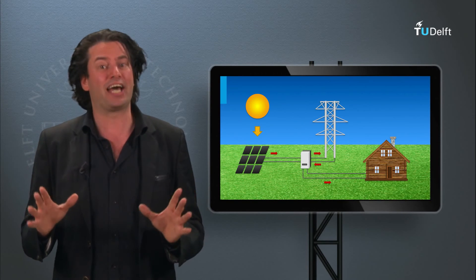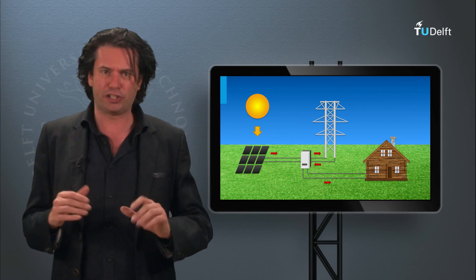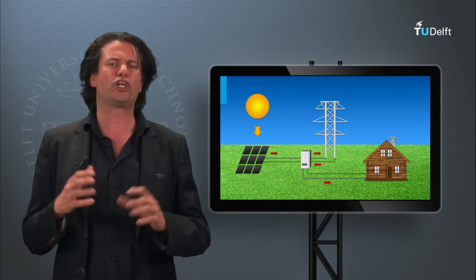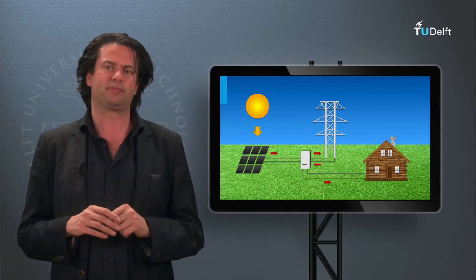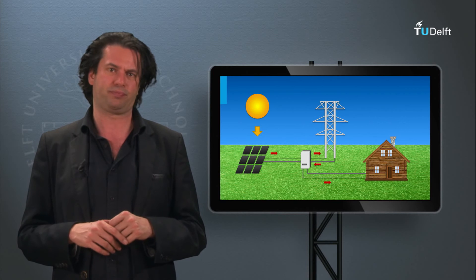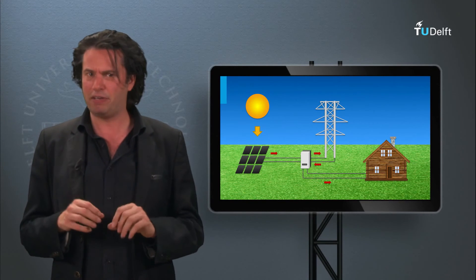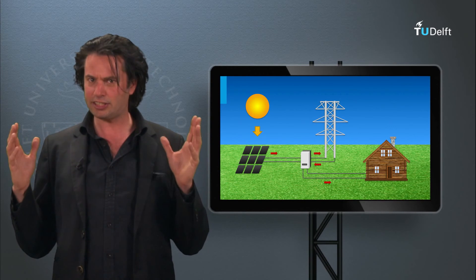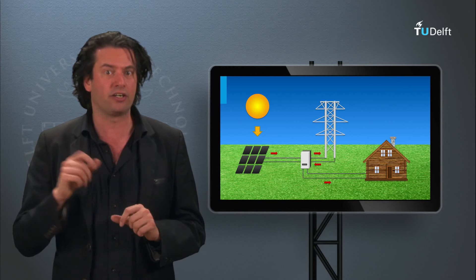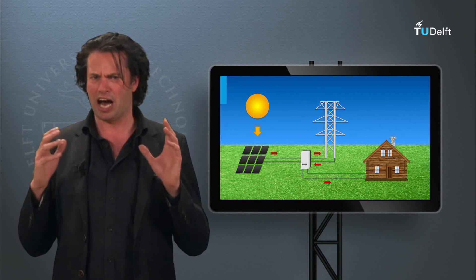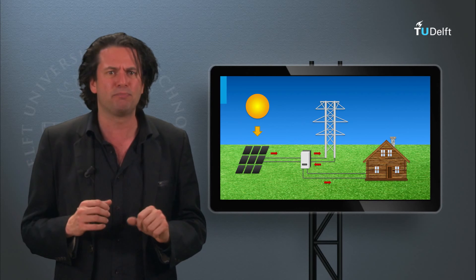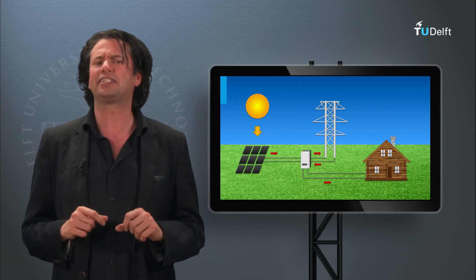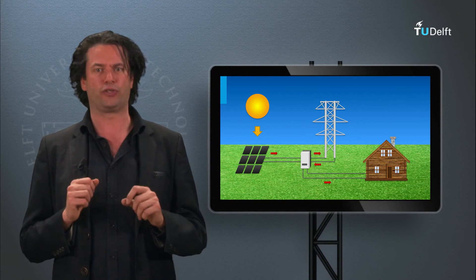By putting together these components we can get different topologies for PV systems. The main features of designing such systems shall be discussed in week 8, the last week of this course. What makes a standalone PV system different from a grid connected one? Which system topology is a better choice for a particular application? And how do we go about designing a PV system for a specific application? These are some of the main questions that I will answer in the last week of the course.